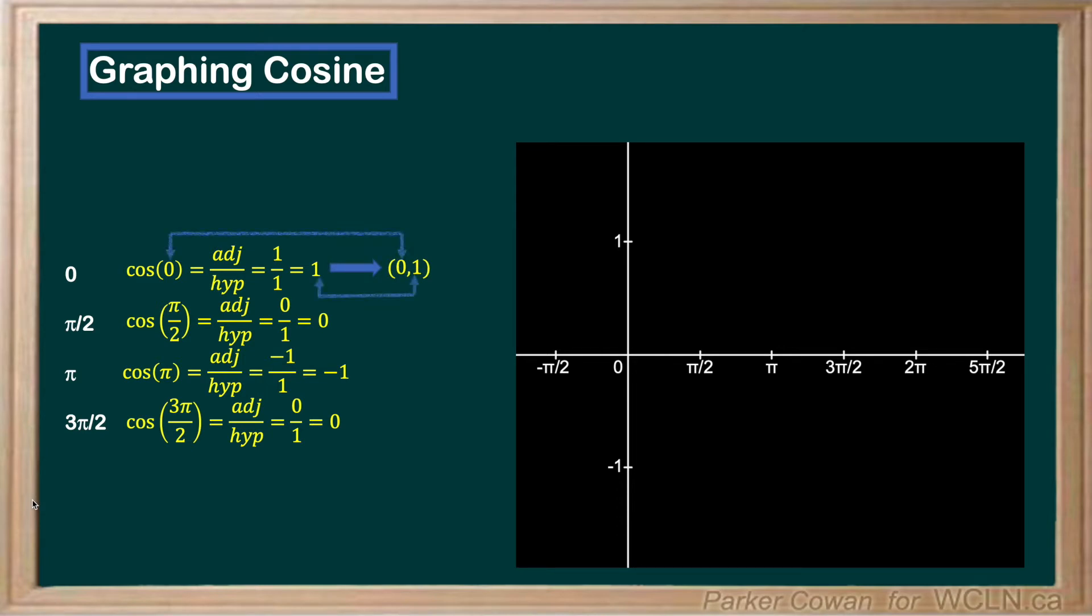Cos(0) gives us 1, meaning our first point is at (0, 1). Cos(π/2) gives us 0, meaning our second point is at (π/2, 0).